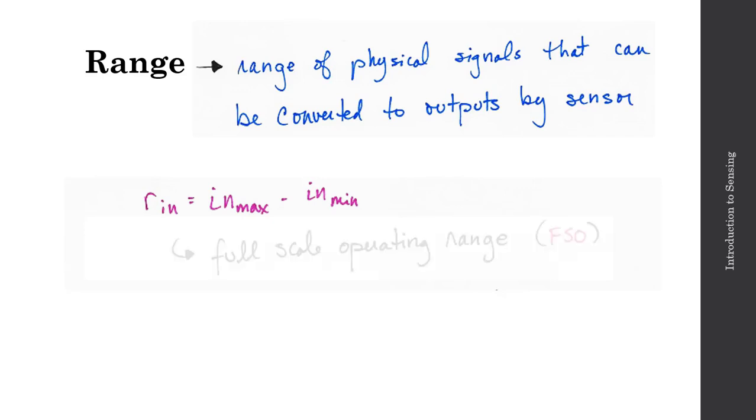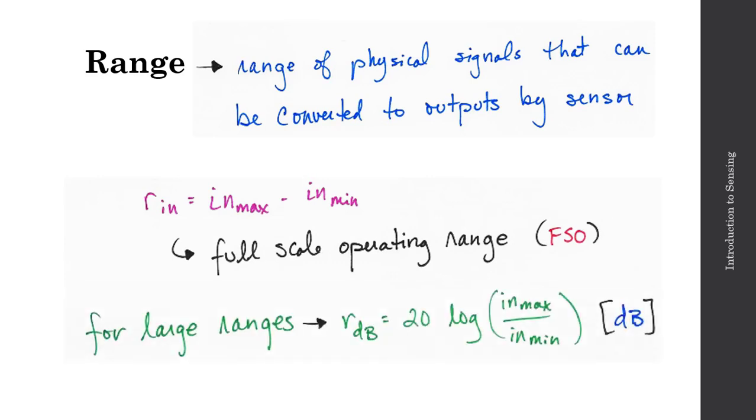You might see this on a data sheet. It's often written as full-scale operating range, or FSO. And in the case where we have a particularly large range, the range is often defined in terms of dBs. So here, that range in decibels, that'll be 20 times log to base 10 of the maximum input signal divided by the minimum input signal.